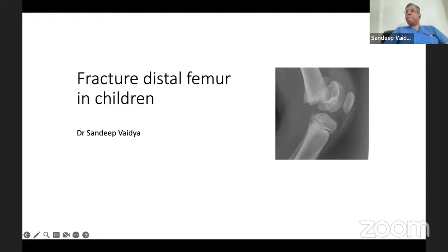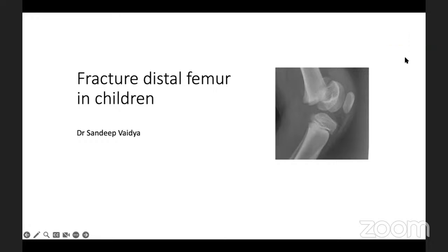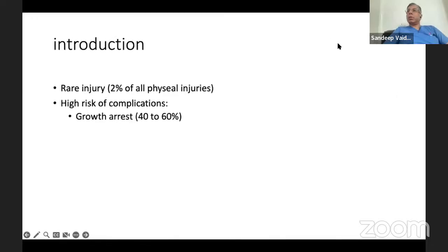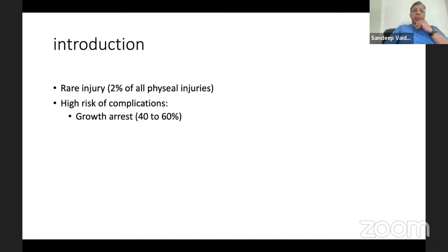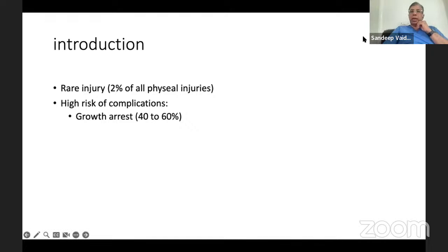My screen is visible? Yes, sir. Okay. Distal femur physial fractures are extremely rare injuries. In fact, they constitute only about 2% of all physial fractures in children. However, what makes these fractures evoke great interest is because the risk of complications is very high. Growth arrest is one of the most important complications of this injury, and the rate of growth arrest following this injury has been reported to be as high as 40 to 60%.